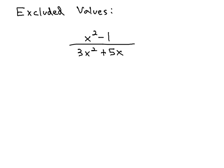In this problem, we're going to see if we can identify what those excluded values are that we cannot use in our domain or for values of x. We're looking at x squared minus 1 over 3x squared plus 5x. Our rational expression is, to use the term loosely, a fancy fraction.